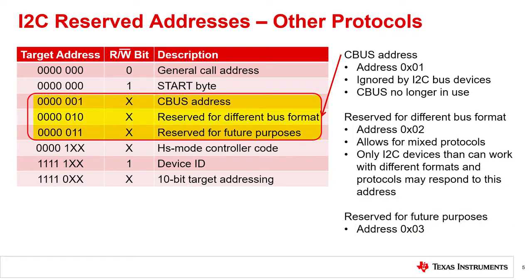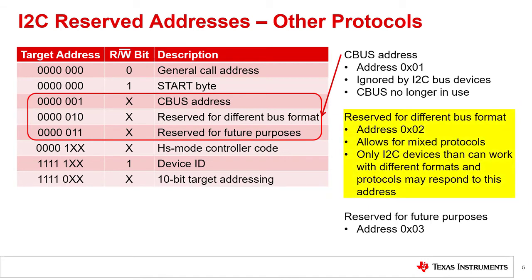The next three I2C addresses listed in the table are all reserved for different reasons. Address 01 is reserved for the CBUS protocol so that CBUS devices could be placed on the I2C bus. However, the CBUS protocol is no longer used and this I2C address is ignored by most devices. Address 02 is reserved for different bus formats. This is designed to allow communication between different protocols. Only I2C devices that work between different protocols can respond to this address.